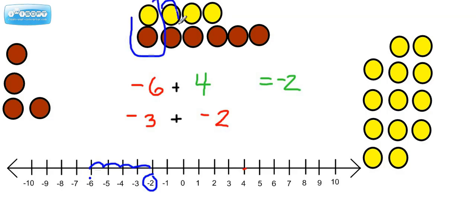This cancels out, this cancels out. These are called zero pairs. This cancels out, this cancels out. And look at what we have left. We have two red chips left. Isn't that what we have represented here?